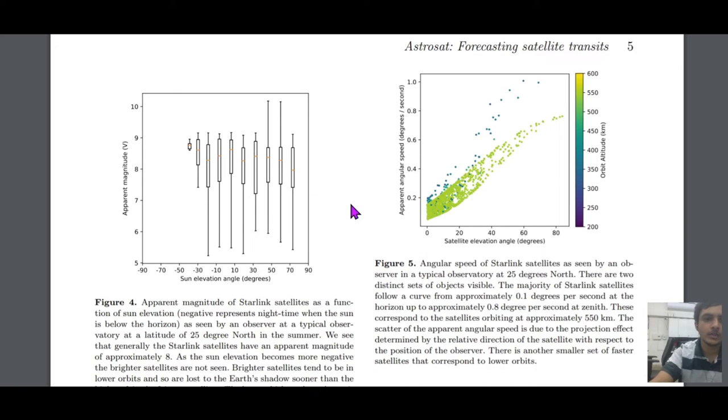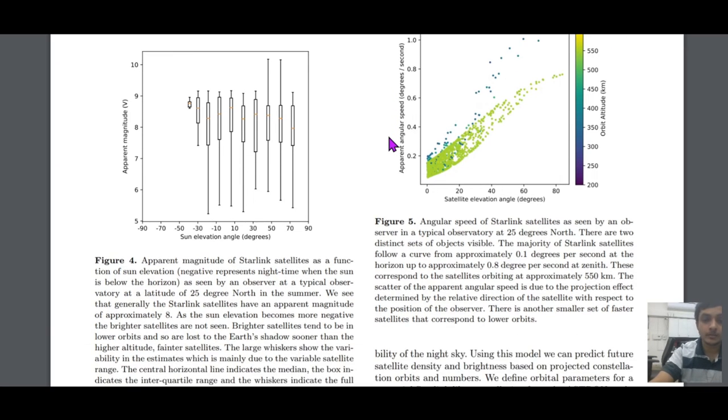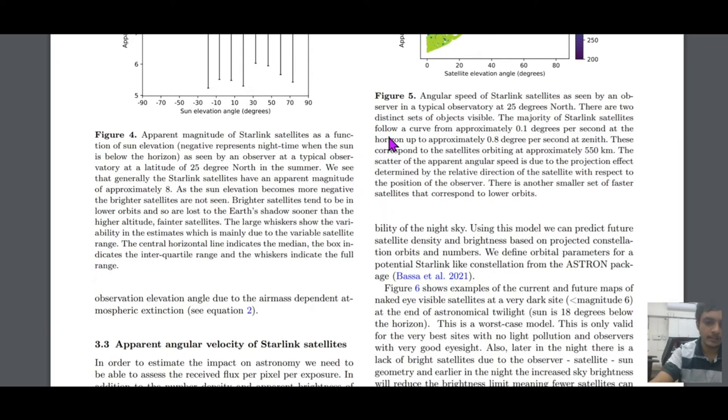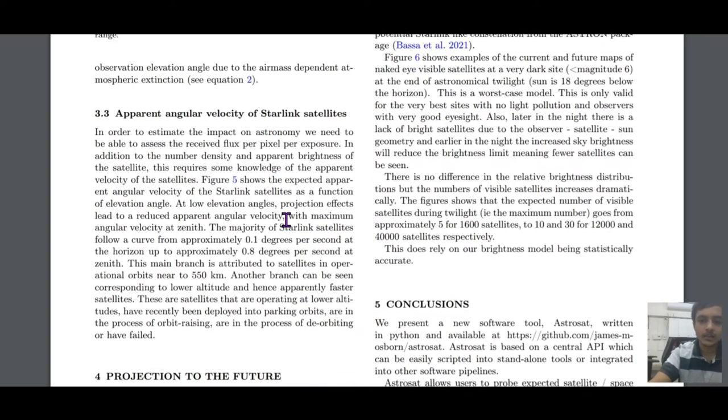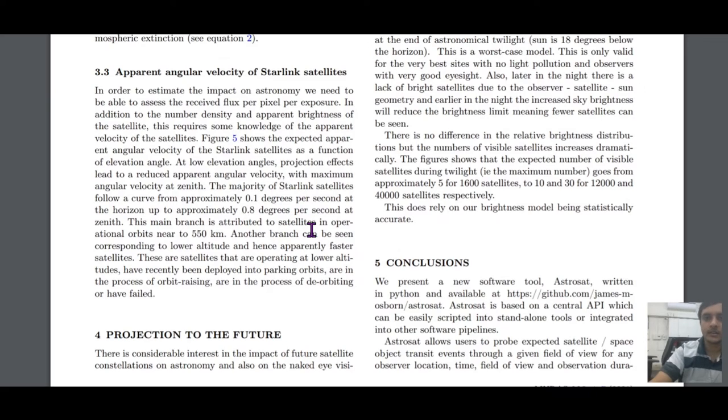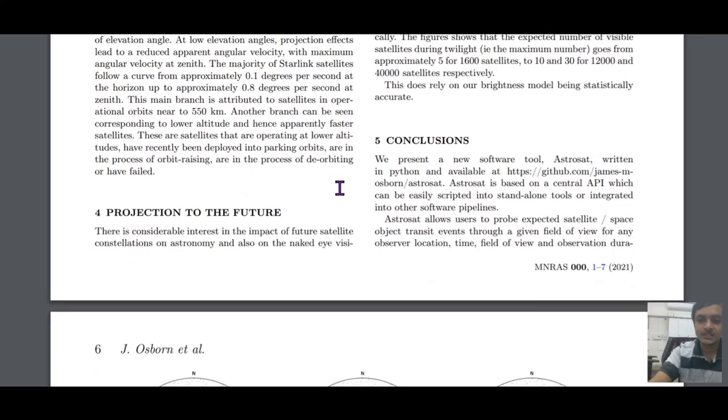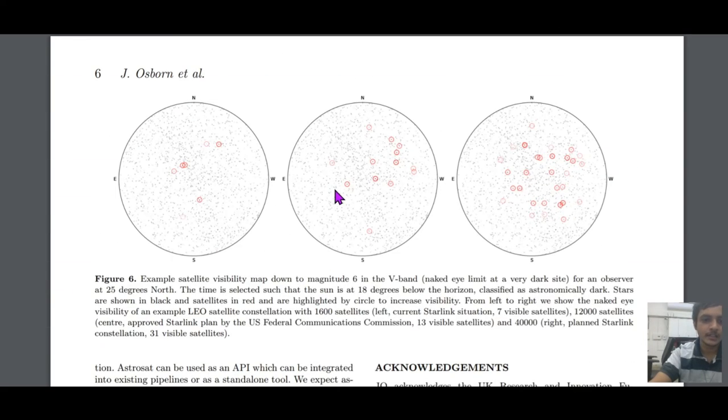But the Starlink project might make it a problem. And we might need to have such kind of pipelines or codes, just to make sure that everything is accounted for and there is no loss in the data quality. I am not going into the details of how Starlink satellites are, what is the angular resolution, angular width, how big they are, how bright they are, or whatever things that needs to be modeled.